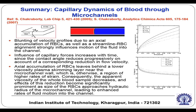In early days of research in microfluidics around 2005, a paper described the dynamics of blood flow through a microfluidic channel based on all these considerations. One key finding: blunting of velocity profiles due to axial accumulation of red blood cells, as well as streamlined RBC alignment, strongly influences the motion of fluid into the channel. This is related to the lift force that blood cells experience, which becomes more important as you reduce the diameter of the channel.